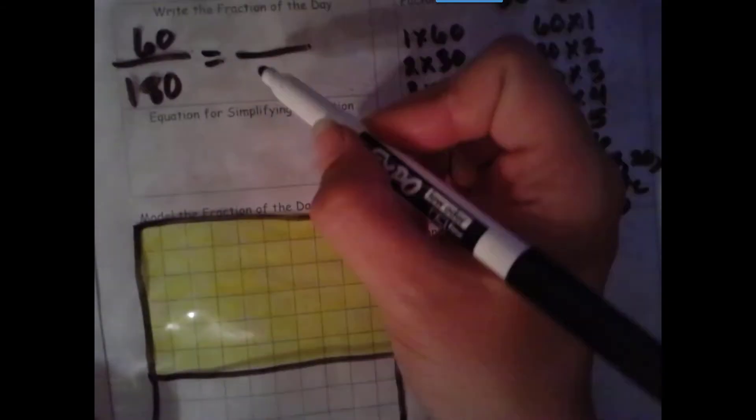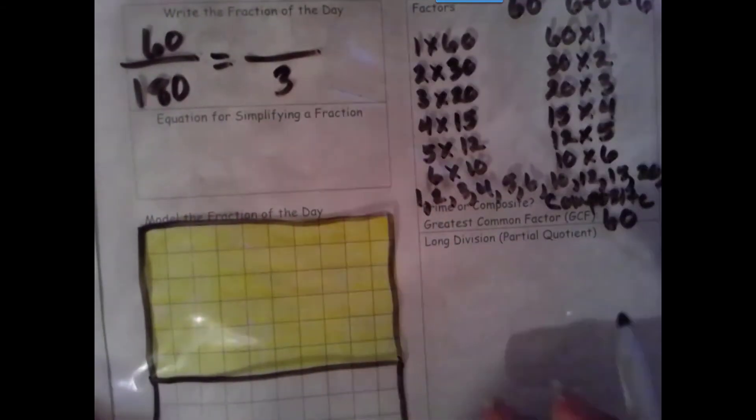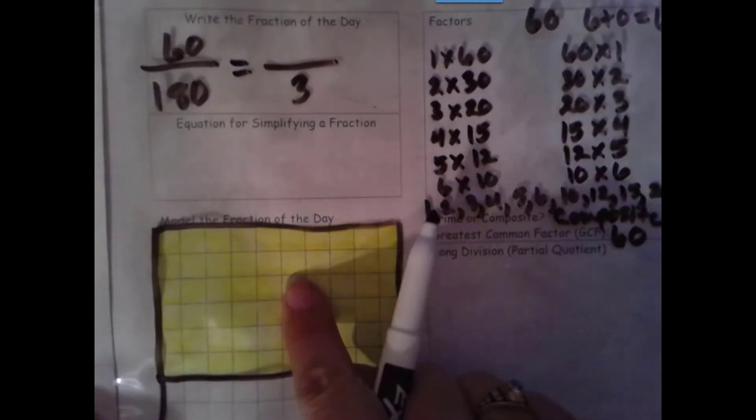Let's see how many groups of 60 we have: 1, 2, 3. 3 groups of 60. How many groups of 60 are shaded in? 1.